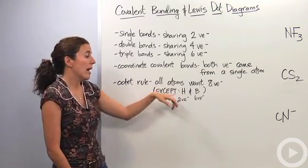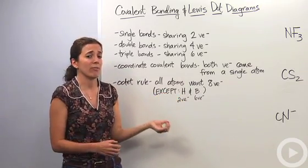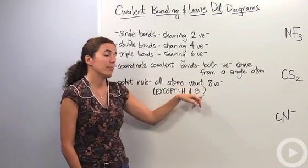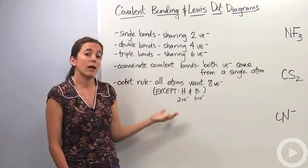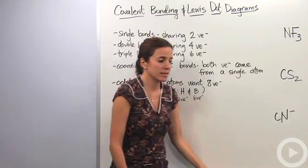So all atoms are going to want eight valence electrons around it. The two exceptions mainly are going to be hydrogen, which is just too tiny to have that many around. It only wants two. And boron, which is also pretty small. That guy only wants six. But everybody else wants eight. Alright, so let's take this into action.